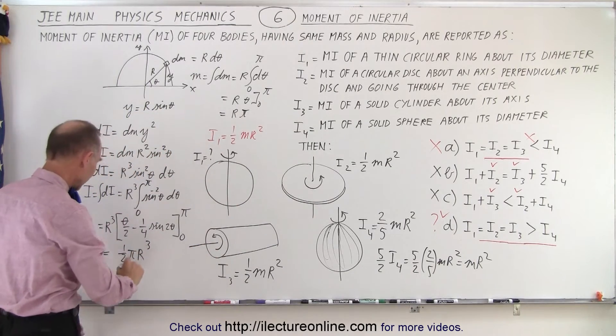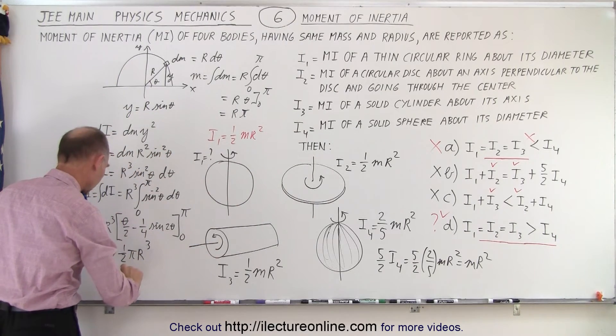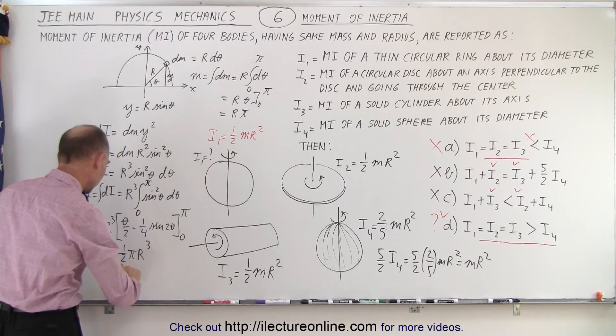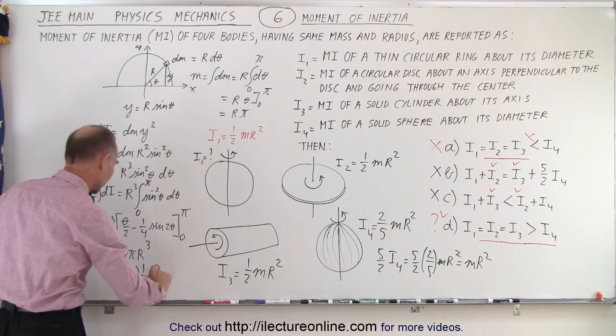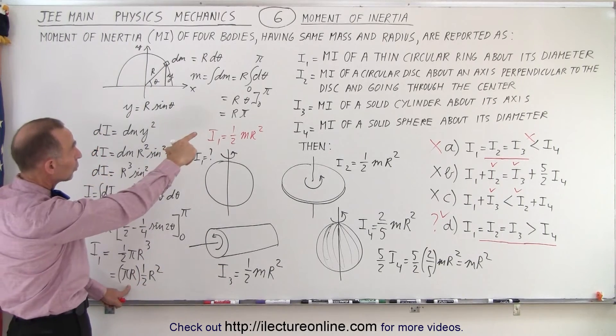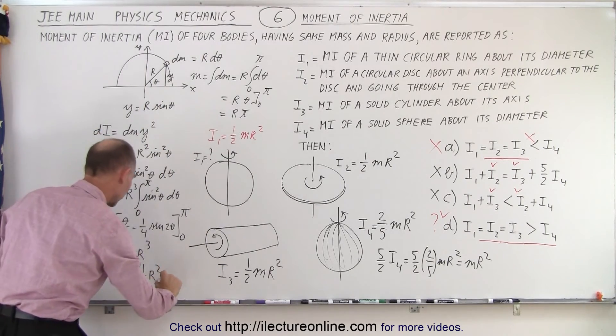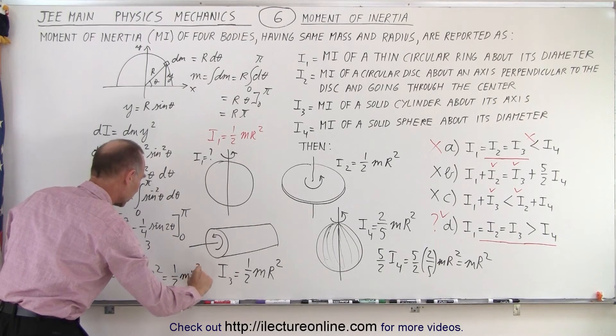So if I separate that out, I could write this as, let's see here, pi times r times a half r squared. And of course, pi r is equal to mass, so this would be 1 half mass r squared.